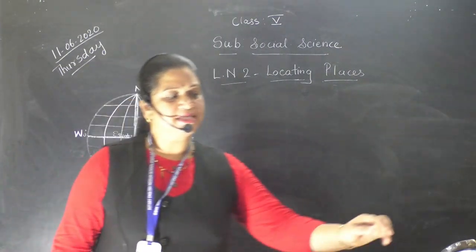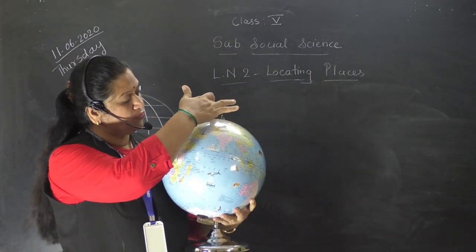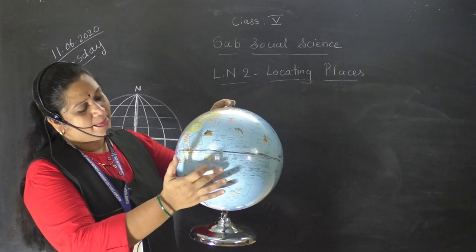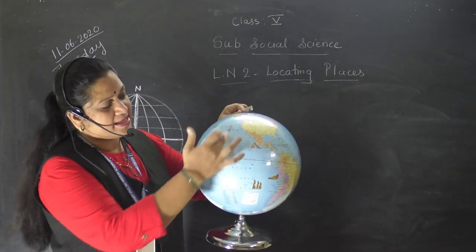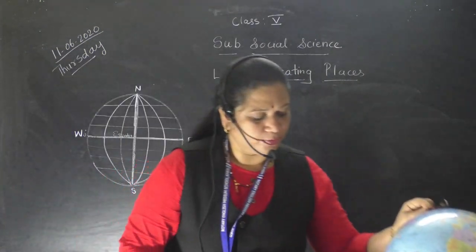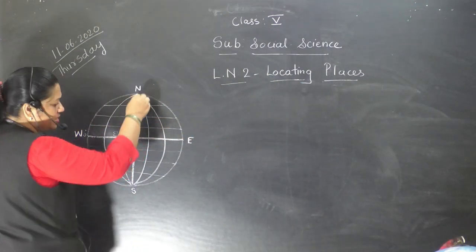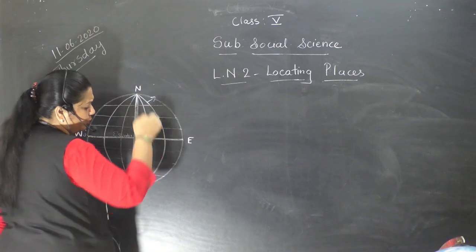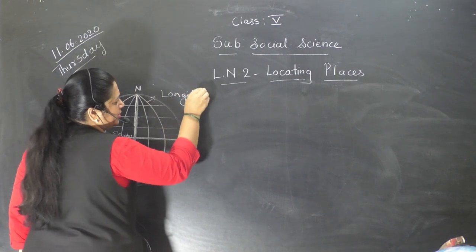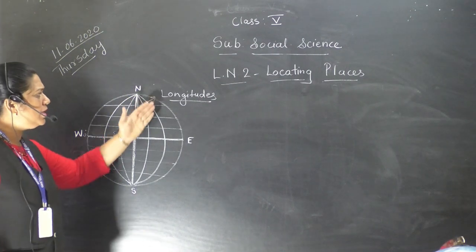On the globe you can see other imaginary lines also — the imaginary lines which run from pole to pole, that is from north pole to south pole. Can you see these imaginary lines which pass from north pole to south pole? So what are these imaginary lines called? The imaginary lines which pass from pole to pole are called longitudes.